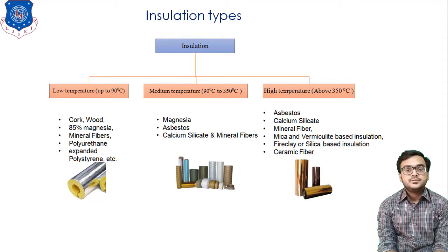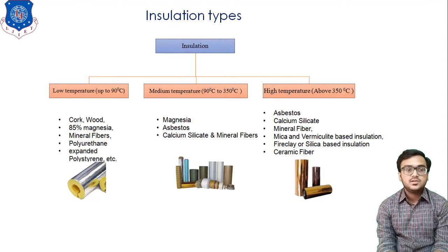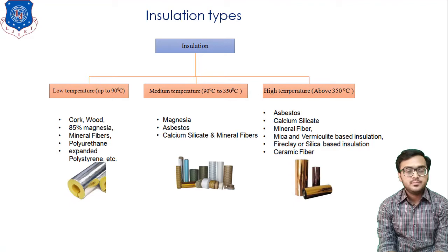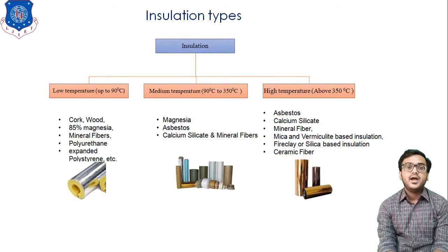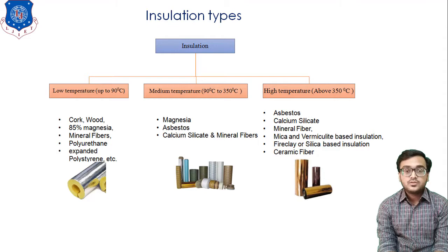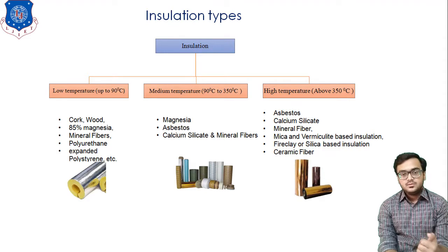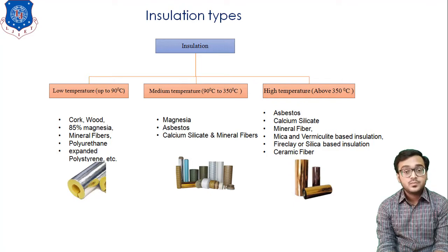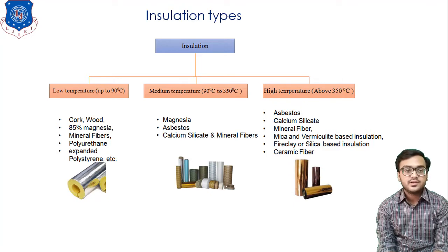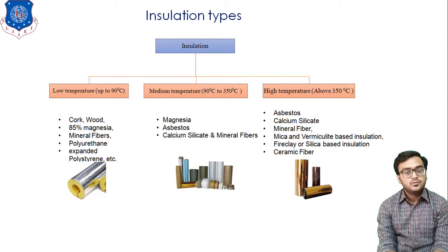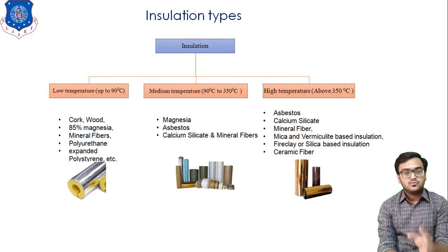According to temperature, insulation is categorized into three types. First is low temperature insulation, which can bear temperatures up to 90°C. Second is medium temperature insulation, for temperatures between 90° and 350°C. Third is high temperature insulation, for temperatures above 350°C. For low temperature insulation we can use materials like cork, wood, magnesia, and mineral fibers.